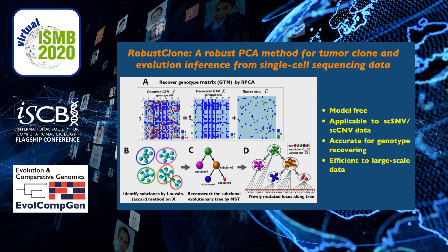Then, RobustClone clusters cells into subclones by applying the k-means clustering method on the recovered low-rank genotype matrix X. After that, RobustClone reconstructs the subclonal evolutionary tree by finding a minimum spanning tree using Euclidean distance after extracting the consensus subclonal genotypes. From the evolutionary tree, we can observe the subclonal development of the tumor and the novel mutations of each subclone compared with its parent.